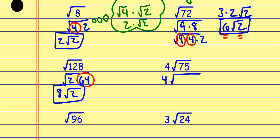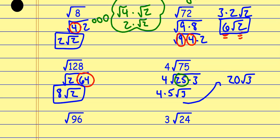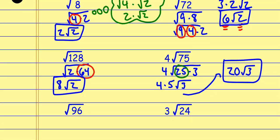For 4√75, I look for a perfect square that divides evenly into 75. The biggest one is 25, so it's 25 times 3. The square root of 25 is 5, so I put it on the outside — and there's already a 4 out here, so now I have a 5 out here as well. The 3 is the only thing I can't take the square root of. So that's going to be 20√3.